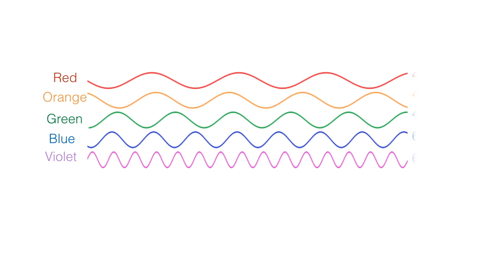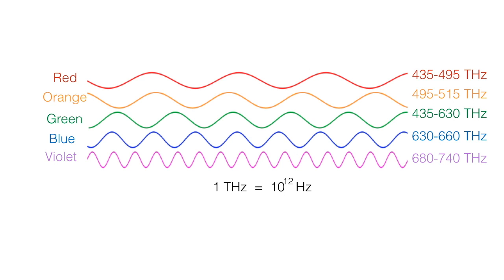are red, orange, green, blue, and violet. These different colors have different frequencies and wavelengths varying from 435 terahertz to 740 terahertz, as 1 terahertz equals 10 to the power 12 hertz.